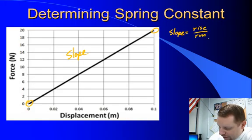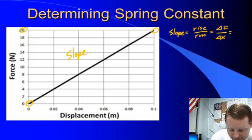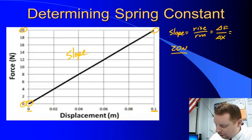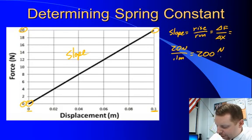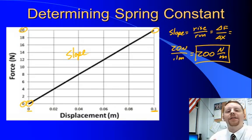The slope k is rise over run, which is the change in force over change in displacement. In this case, our change in force is 20 newtons minus 0 newtons, or 20 newtons, divided by the change in displacement, 0.1 meter minus 0 meters, or 0.1 meter — giving us a spring constant of 200 newtons per meter. So the slope of a force versus displacement graph gives you the spring constant k in newtons per meter, which tells you how stiff a spring is.